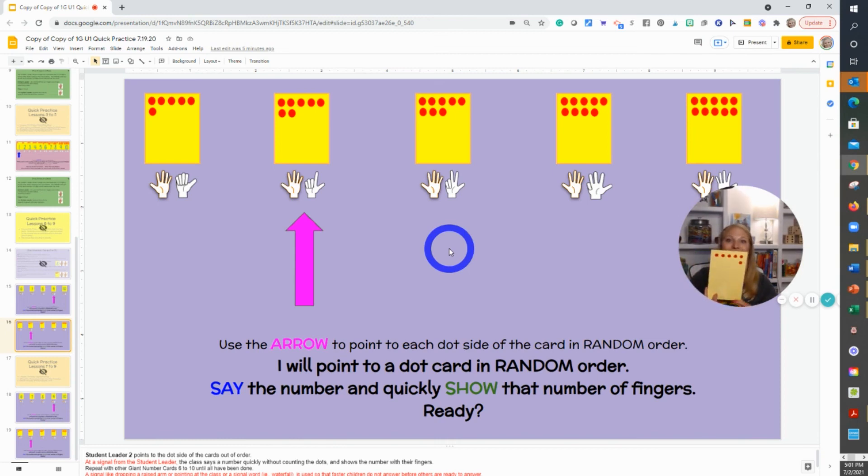You would continue in that manner. Show me, and they would quickly show you five and three. Boys and girls, say the number. Eight. Five and three make eight.